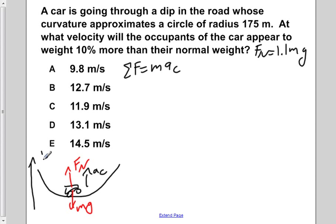Here, we're considering the up direction to be positive. So Fn is positive, a centripetal is positive. But mg, which is directed in the opposite direction, would be considered negative.